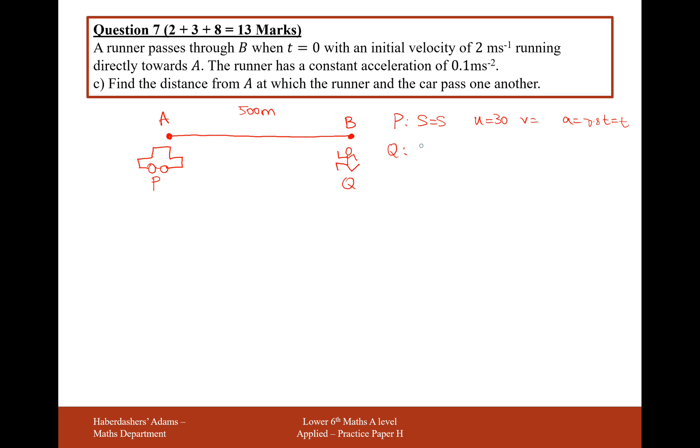For Q, S is equal to, we've already travelled say this distance here is S. The distance the runner is going to travel is 500 take away S. If we count the left-hand direction as positive for the runner Q, and the right-hand direction as positive for the car, as long as we're consistent throughout our P formula and our Q formula, that will be fine. Its initial velocity is 2, we don't mind about its final velocity, A is equal to 0.1, and T is just equal to T.